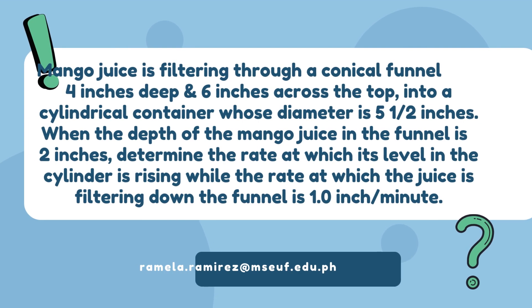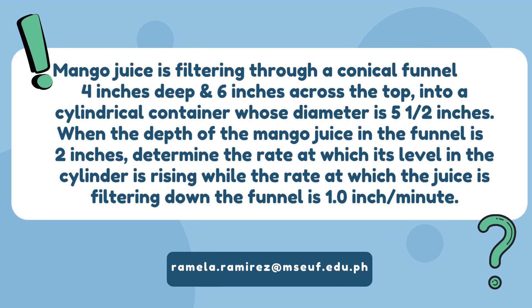The problem states that juice is filtering through a conical panel that is 4 inches deep and 6 inches across the top, into a cylindrical container whose diameter is 5 and a half inches. When the depth of the liquid in the funnel is 2 inches, determine the rate at which the level in the cylinder is rising, while the rate at which the juice is filtering down the panel is 1 inch per minute.